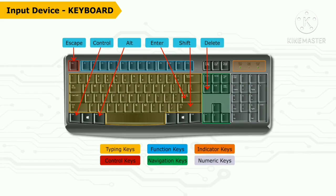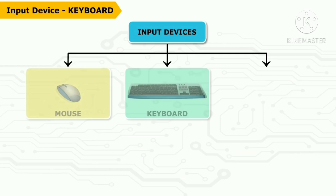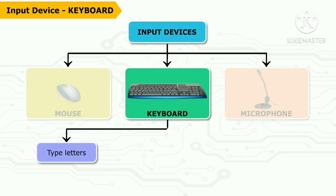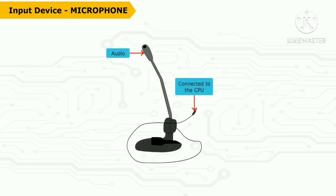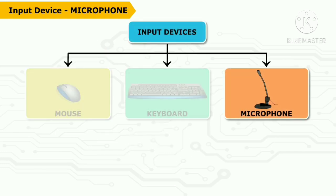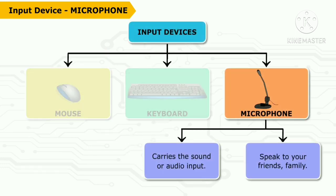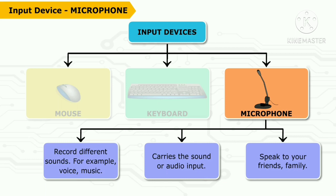The keyboard has 104 keys such as alphabet, number, special, and arrow keys. These keys are used to type letters, words, and numbers, and to enter commands. A microphone is attached to the CPU cabinet through a wire and is used to record different sounds in a computer.